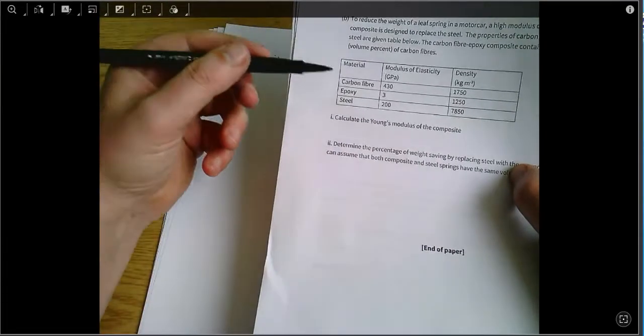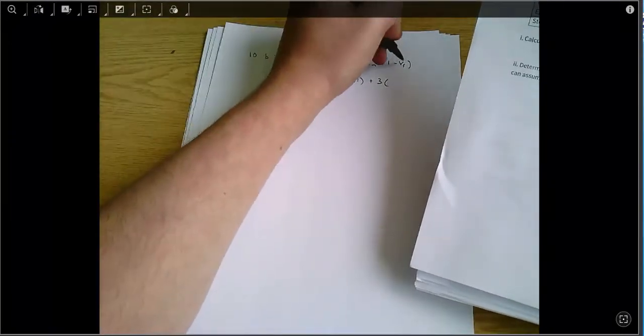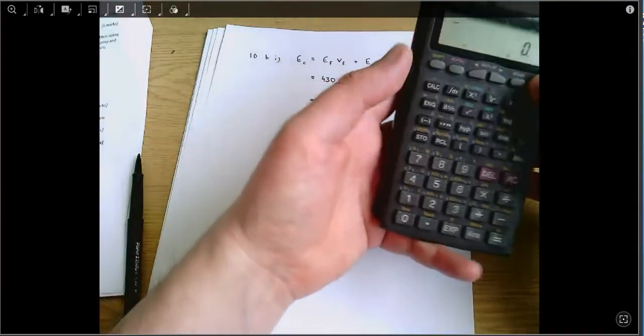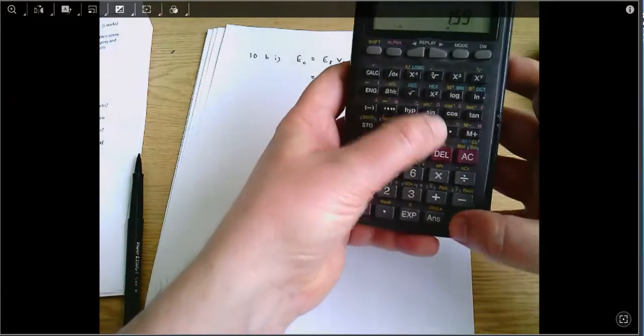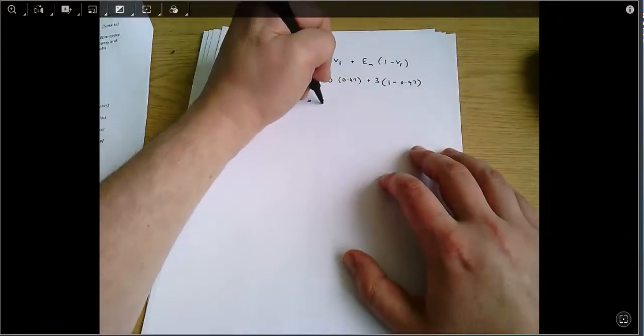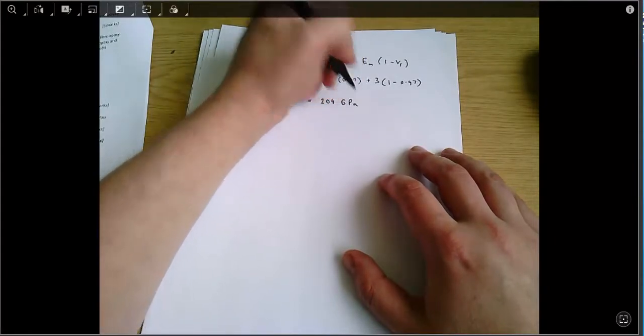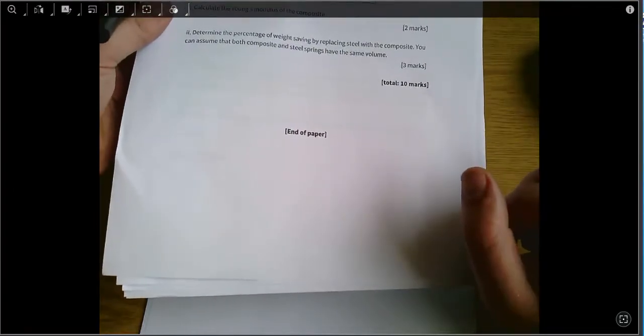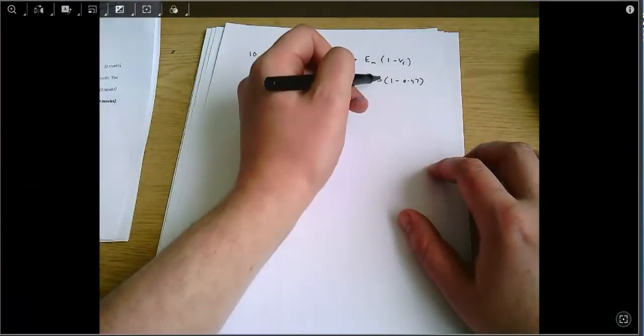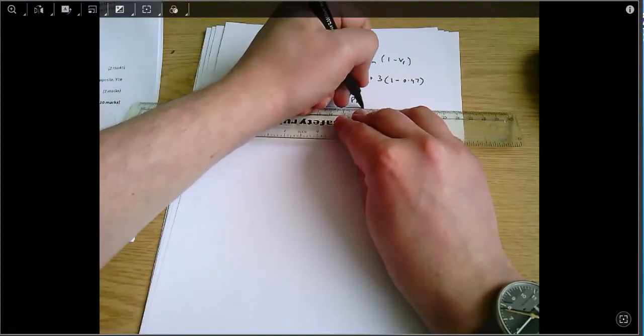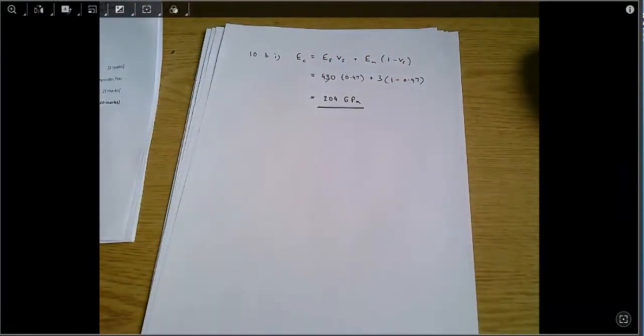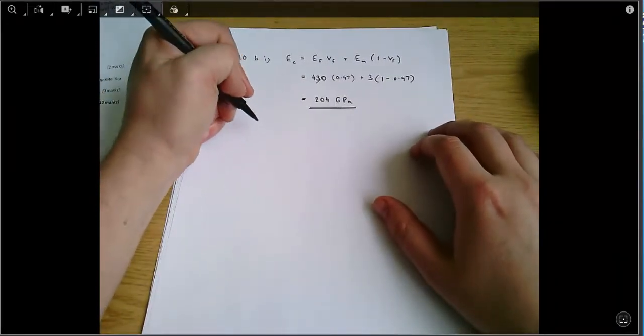Plus Young's modulus of the matrix, that's the epoxy, 3 times 1 minus the volume fraction of fiber, 0.47, equals 203.69. I'm going to call that 204 gigapascals. And the information in the question was in gigapascals, this 430's in gigapascals, this 3's in gigapascals. So final answer is also in gigapascals, and that's the answer. So you can see if you knew where on the formula sheet to look, those were two marks that were quite easy to come by. You write down the formula and you fill in numbers from the question.